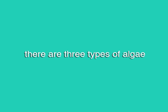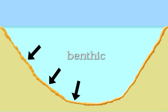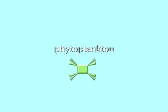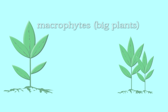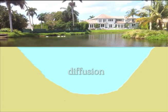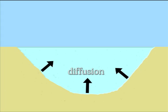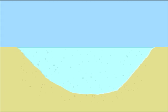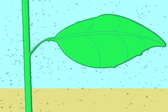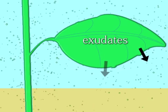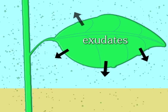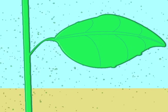In a healthy pond, there are three types of algae: benthic, epiphyton, and phytoplankton. Macrophytes are big plants in our ponds that take out nutrients. Nutrients enter our ponds in several ways. One way is diffusion, where nutrients enter from the soil on the bottom leaching into our water column. There is another natural source of nutrients called exudates, where nutrients leave the macrophytes, escaping from their plant tissues, and enter into the water column.